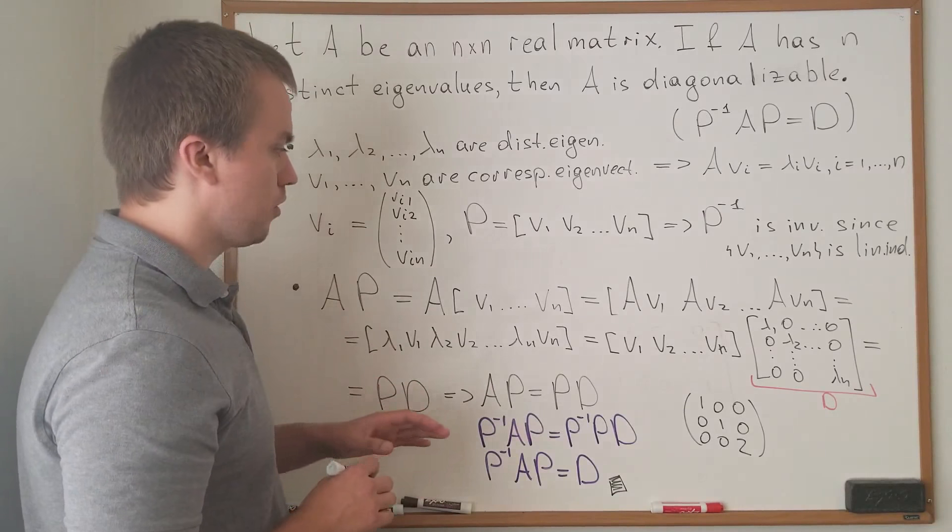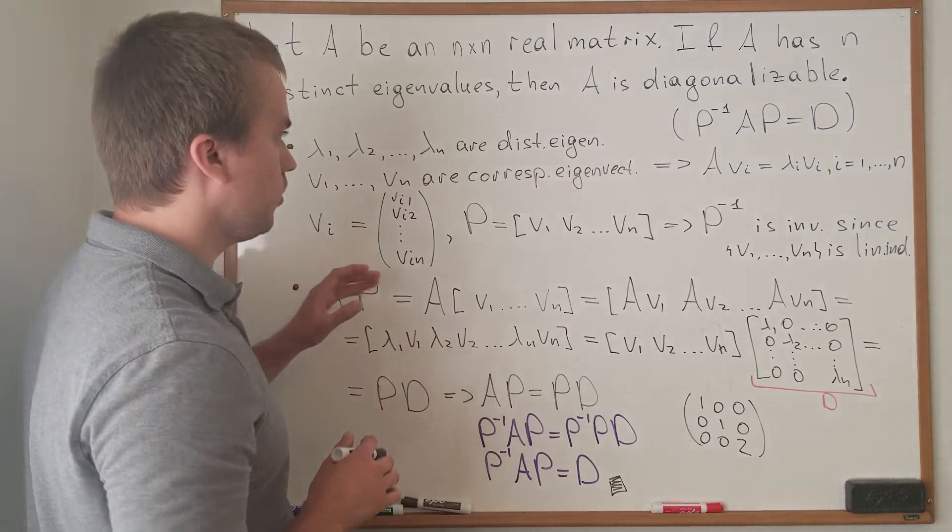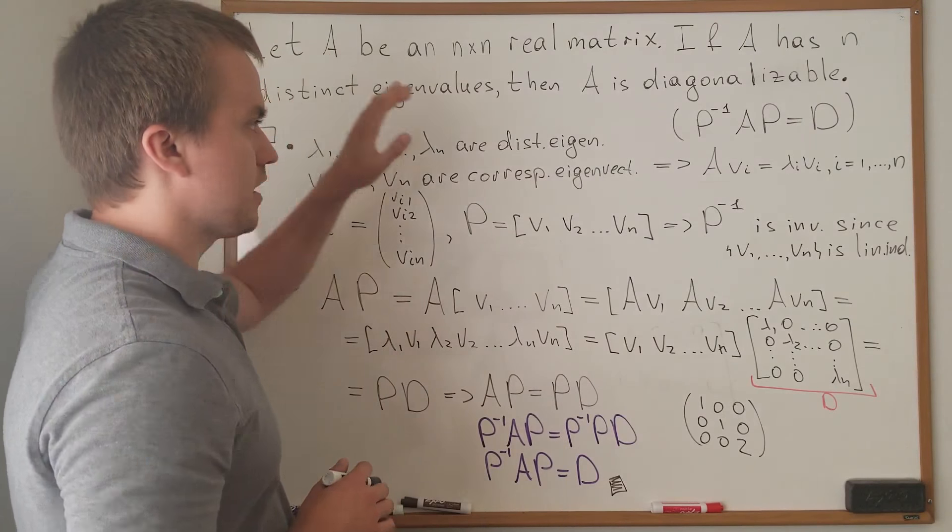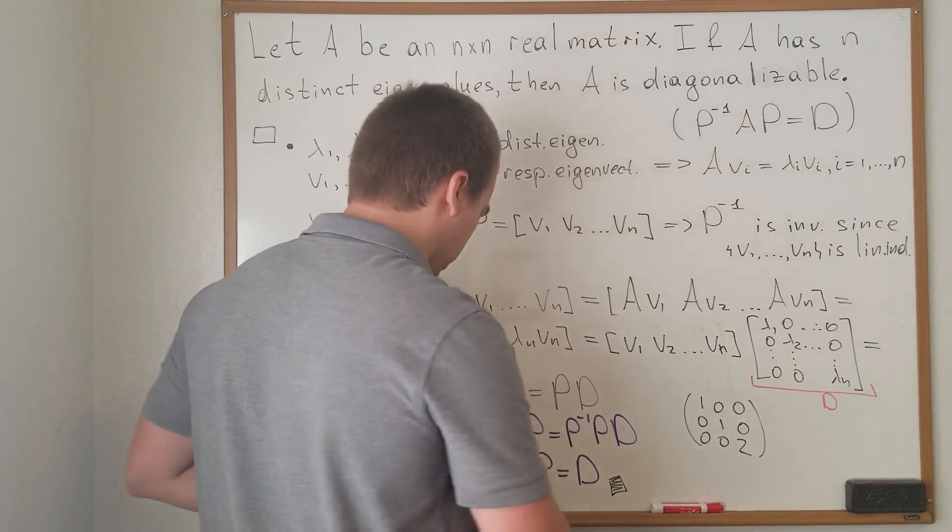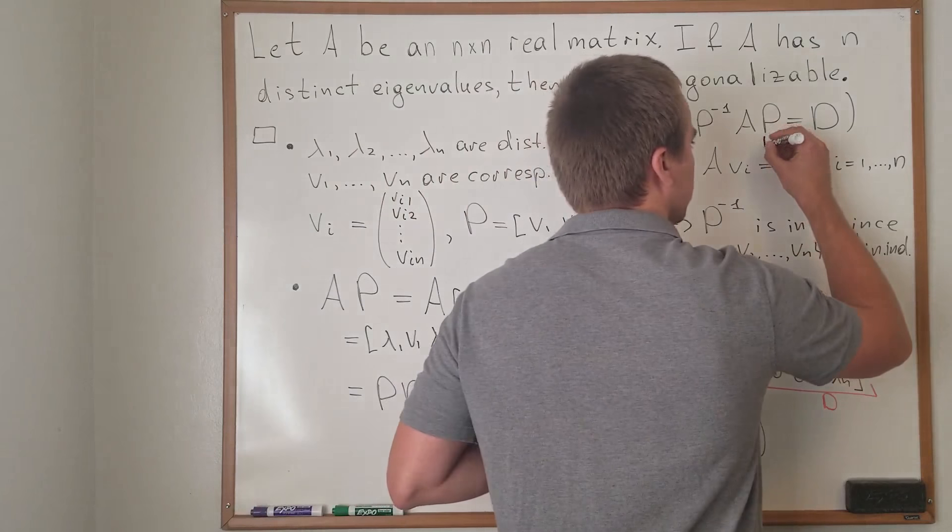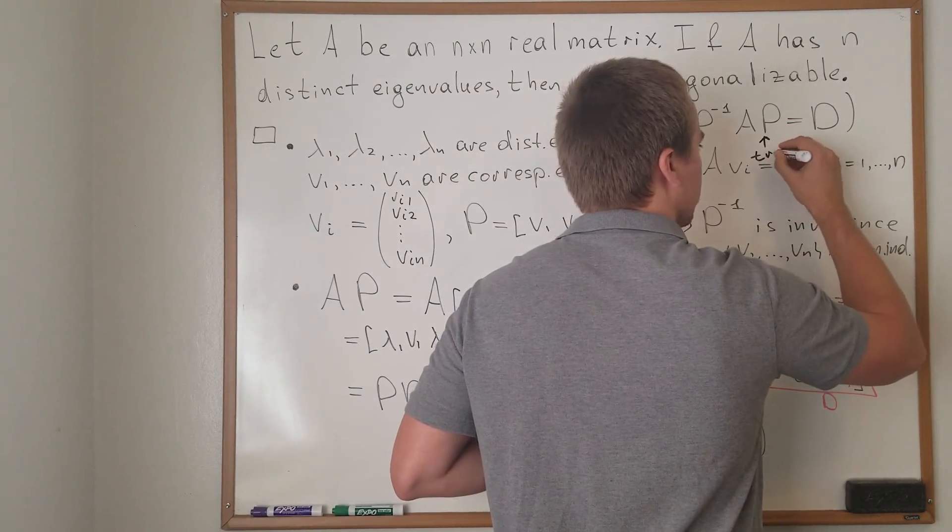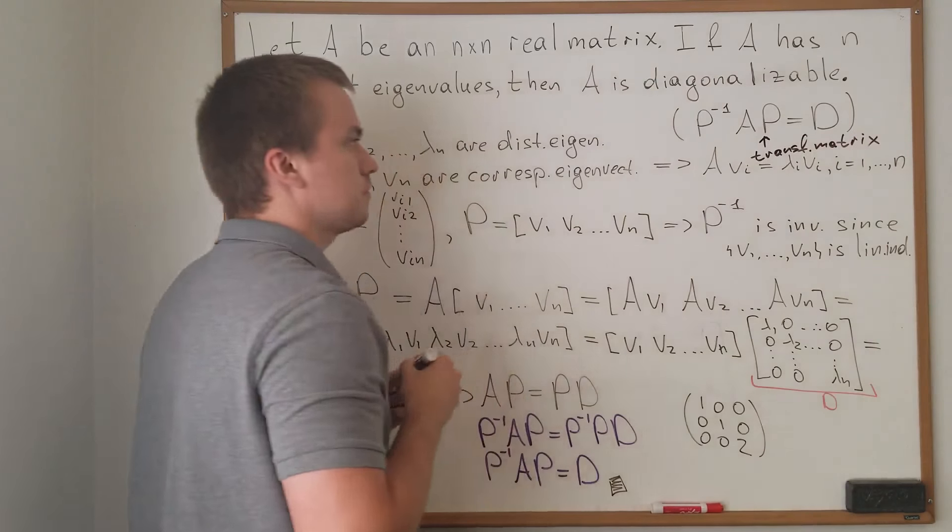Also, in the next video, I want to compute and complete an example with a given matrix A, and I'm going to find this diagonal form. And P, by the way, is called the transformation matrix.